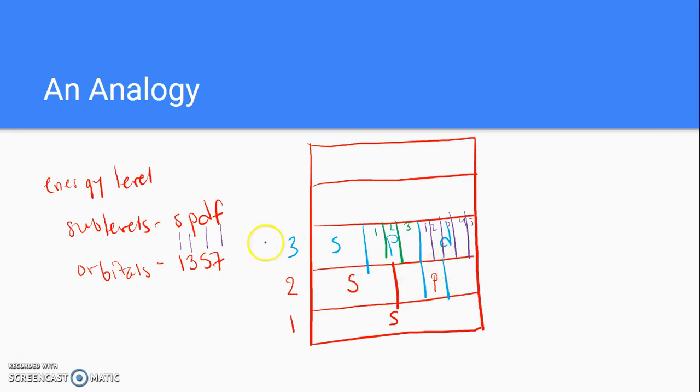Apartment P has 3 bedrooms, so the P sublevel has 3 bedrooms. I divided it up into 1, 2, 3 bedrooms. The third floor has the S, the P, and the D sublevels.